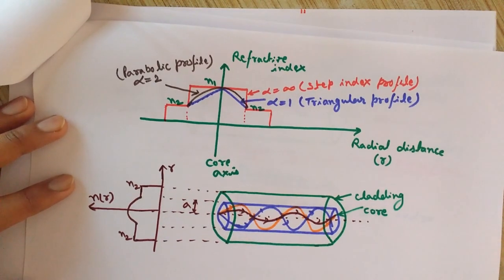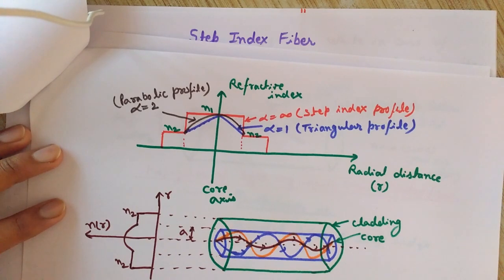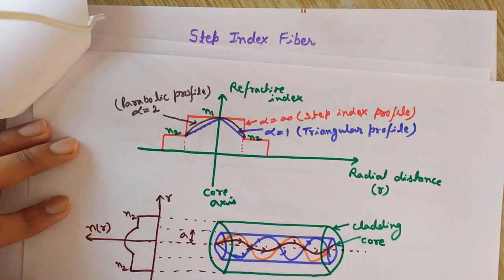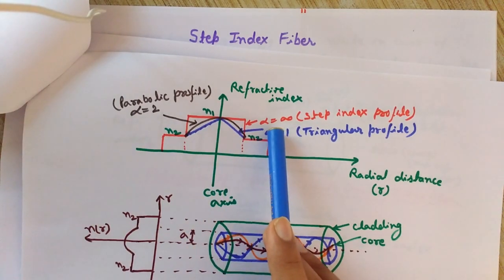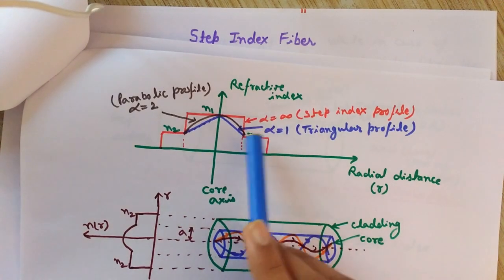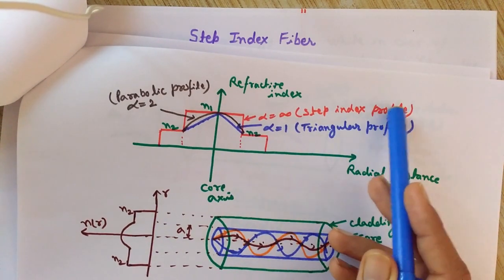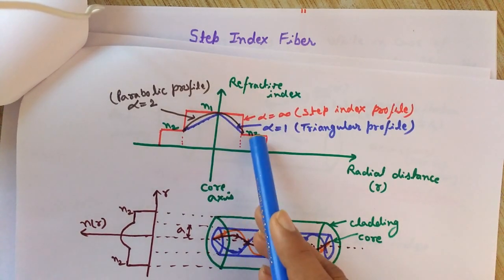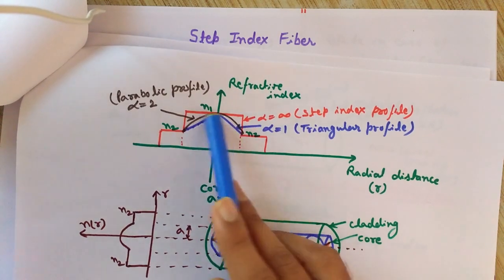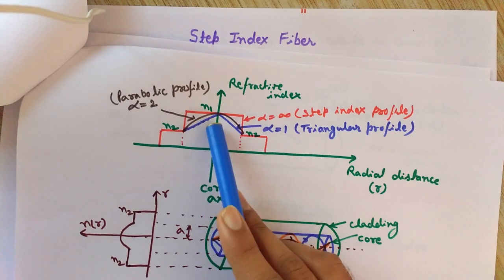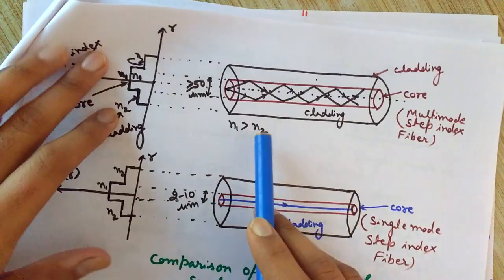We have used the parabolic refractive index profile because it is most commonly used in optical fibers. However, the profile can vary depending on alpha, the profile index. If alpha is infinity, its shape would be like the step index profile — an abrupt change from n1 to n2. If the profile is parabolic, its shape is like a parabola. And for alpha equals one, it is triangular in shape. These are different cases of refractive index profiles.